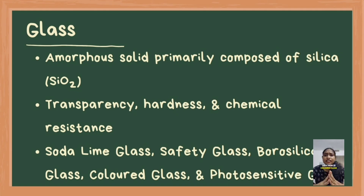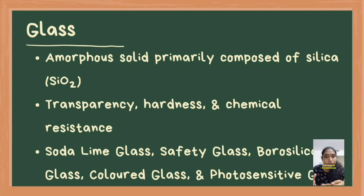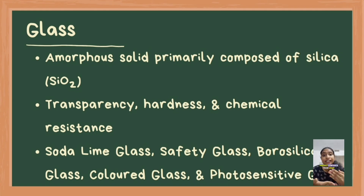Colored glass is made by adding metallic oxides during production to achieve various colors. It's often used for decorative purposes in stained glass windows and for packaging to protect contents from light.